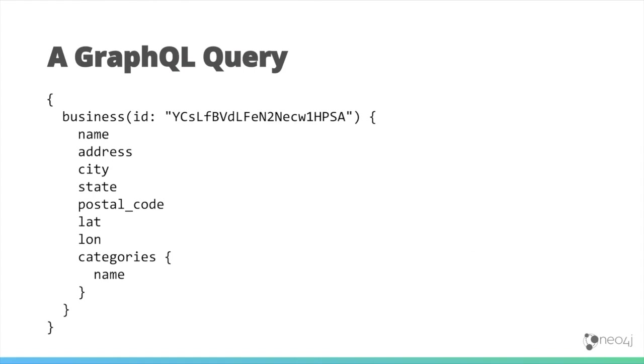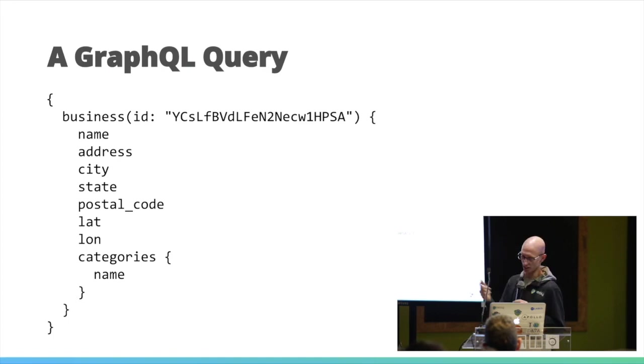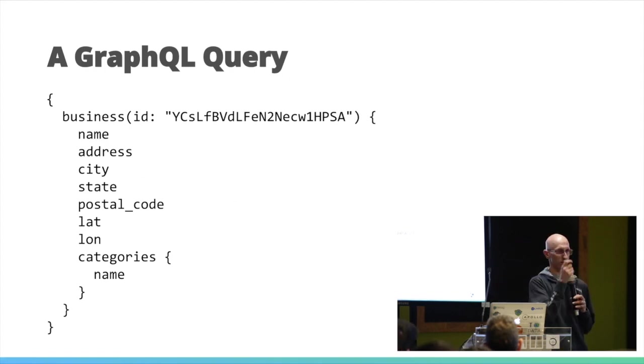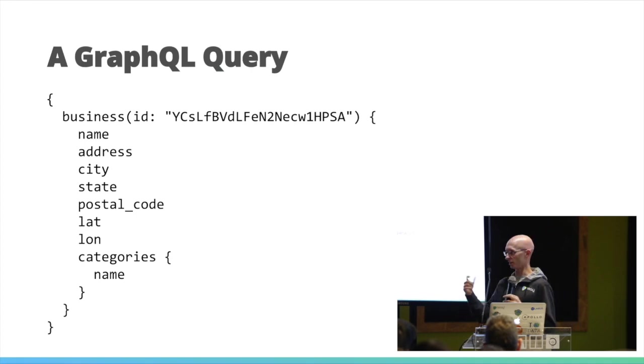Here's a zoomed-in example query against a GraphQL API on the Yelp Dataset Challenge, where Yelp releases a portion of their data covering businesses, categories, and user reviews. My colleague Will created a GraphQL API on top of this dataset. The query finds a specific business by ID — you could also search by name — and specifically requests name, address, city, and so on. For categories, which is an array, we just say we want the name and don't care about the ID.